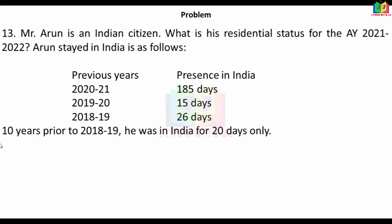To determine his residential status: if the basic condition is fulfilled and both additional conditions are also fulfilled, he becomes Resident and Ordinarily Resident. If only the basic condition is fulfilled but not the additional conditions, he becomes Resident but Not Ordinarily Resident. If the basic condition itself is not fulfilled, he becomes Non-Resident.